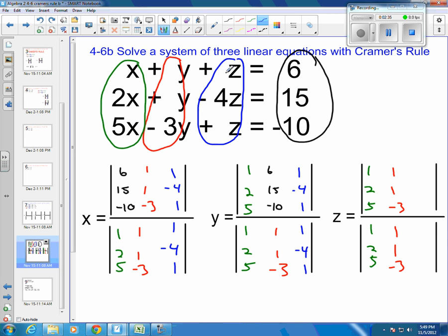And then, my z's, I'll need to change and put my solutions on the top for z. So, that's 6, 15, and negative 10. And I'm actually going to fill in my z's in the bottom because the bottoms always stay the same. So, 1, negative 4, and 1.